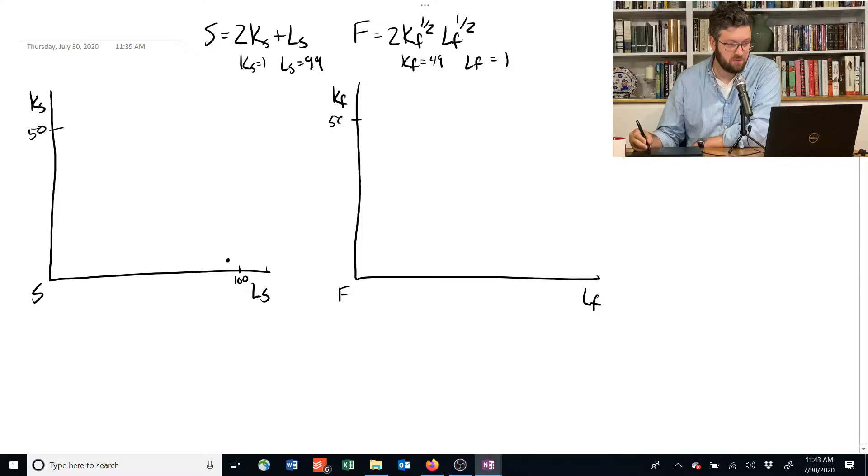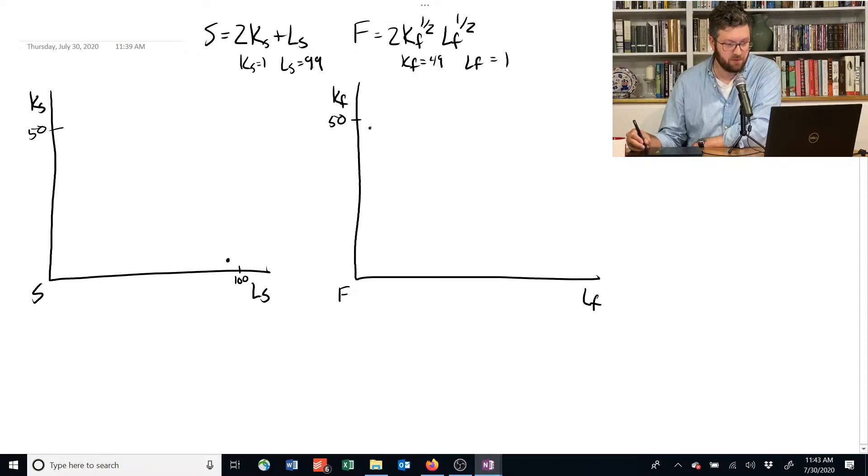Over here, we're using almost all the capital to produce food. So we're at 49 and we're using one labor. So we're somewhere like this.